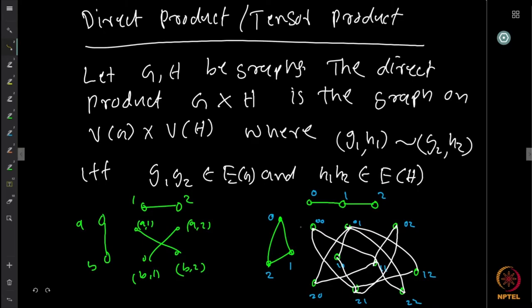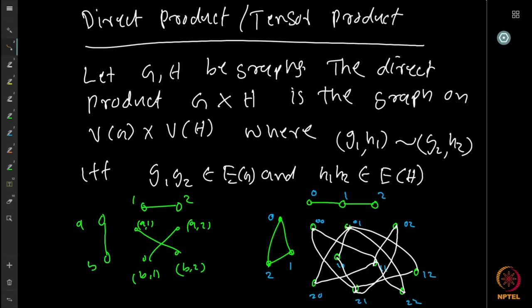Here is an example of the direct product of a cycle and a path of length 3. The graph looks quite different — you don't directly see copies of G and H as you did in the Cartesian product. One can ask in what cases copies of G or H may or may not be present as subgraphs.